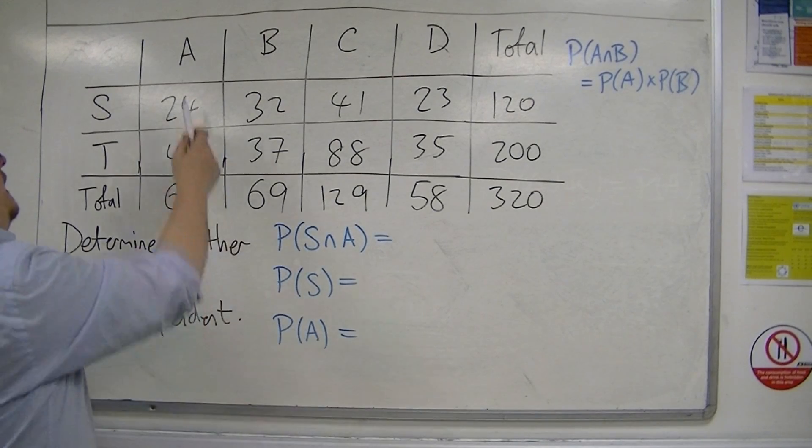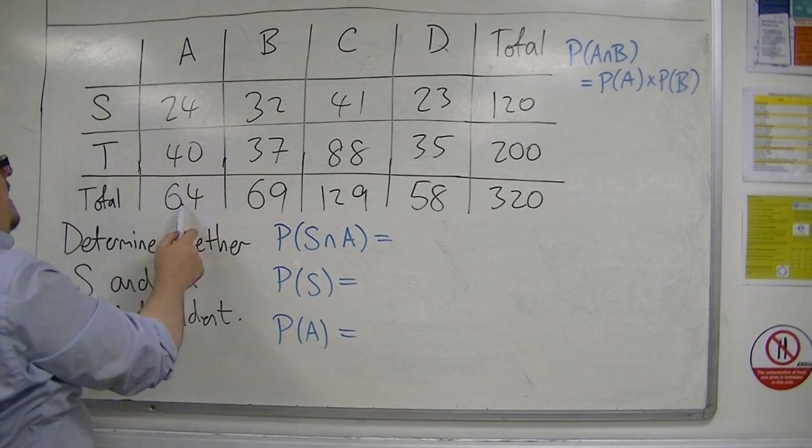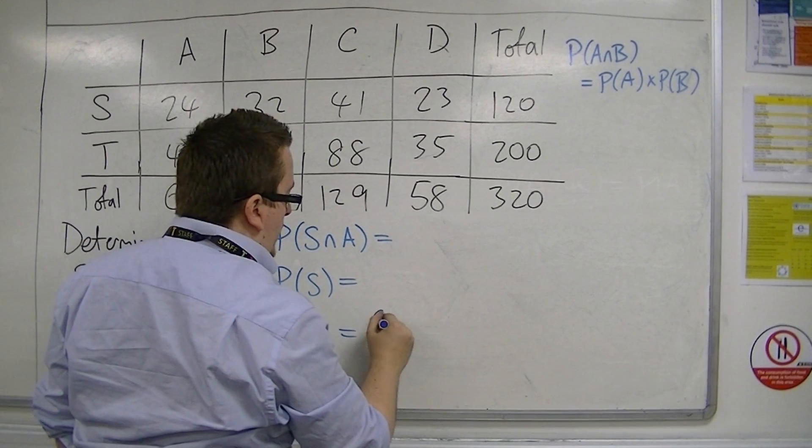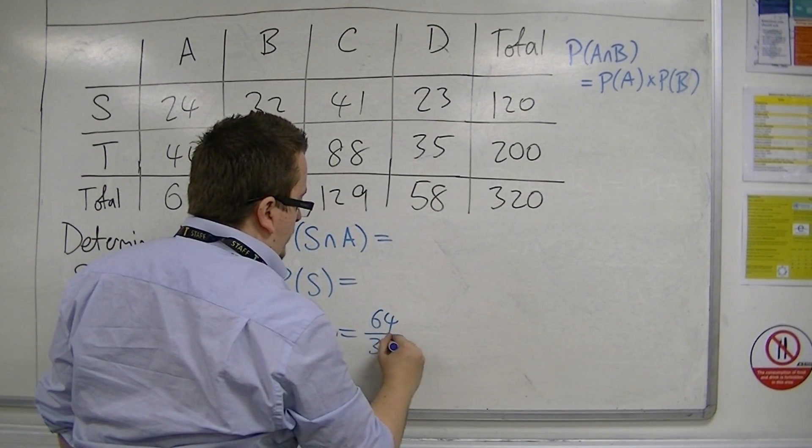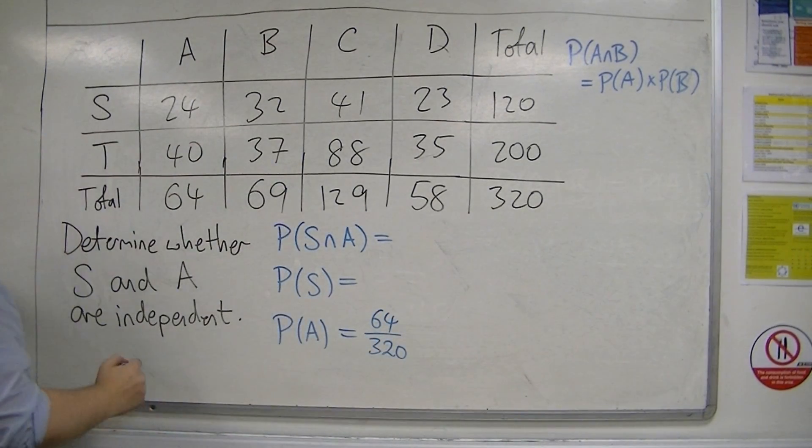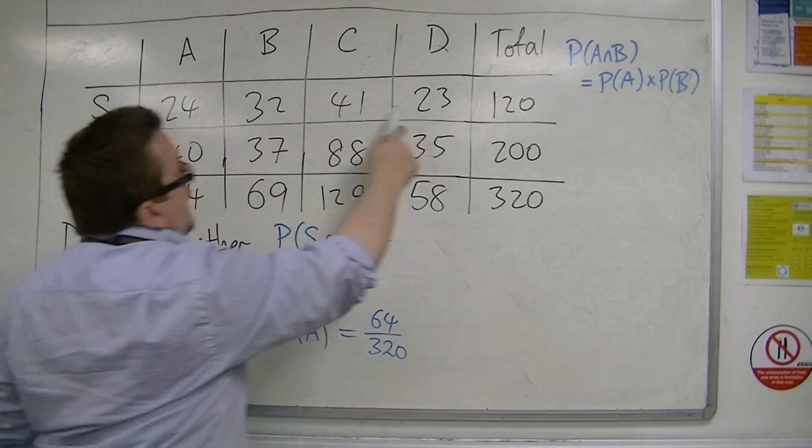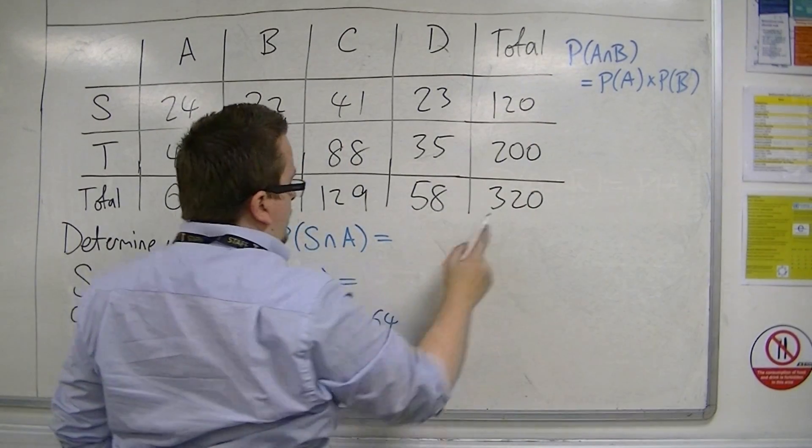The probability of A is 64 out of 320. The probability of S is 120 out of 320.